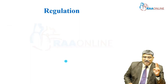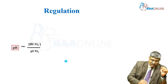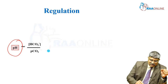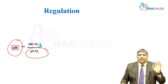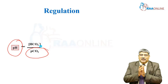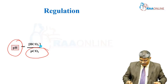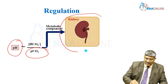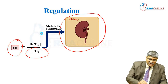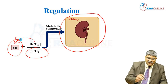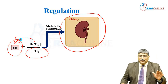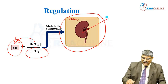Here we have to understand two major components: what happens to the hydrogen ion concentration and what happens to carbon dioxide. The regulation of bicarbonate is primarily handled by the kidney, where bicarbonate is exchanged for hydrogen ion — making the kidney the major regulator of this process.